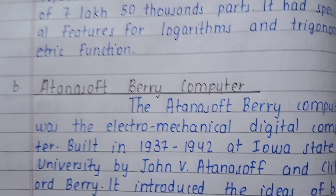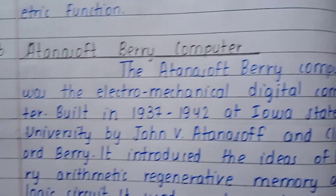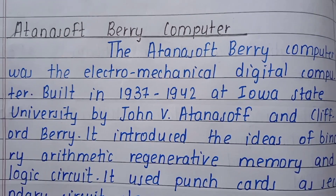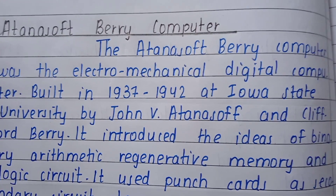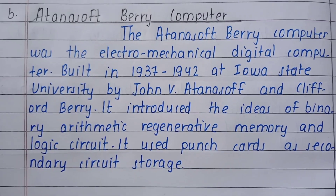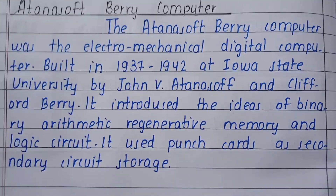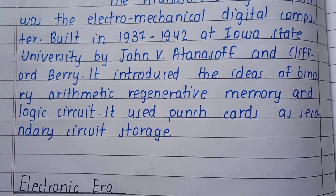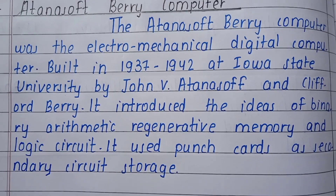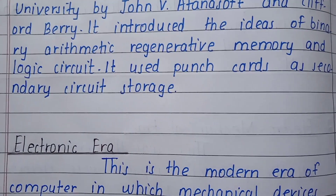The second electromechanical device is the Atanasoff-Berry Computer. It was an electromechanical digital computer built from 1937 to 1942 at Iowa State University by John V. Atanasoff and Clifford Berry. It introduced the idea of binary arithmetic, automatic regenerative memory, and logic circuits. It used punch cards as secondary circuit storage.